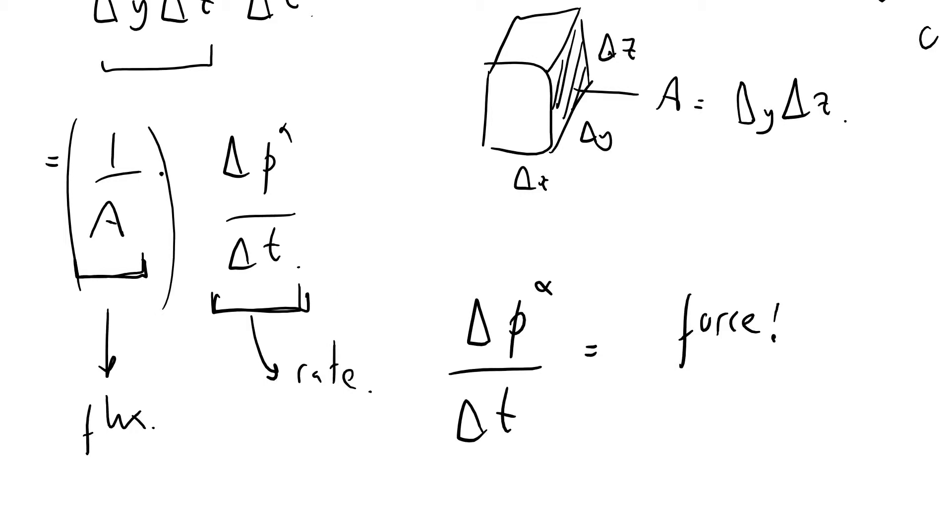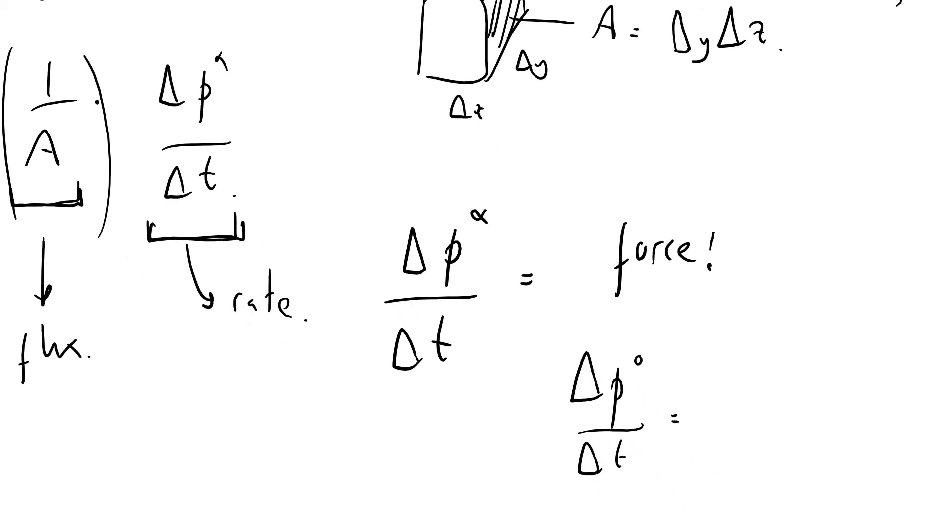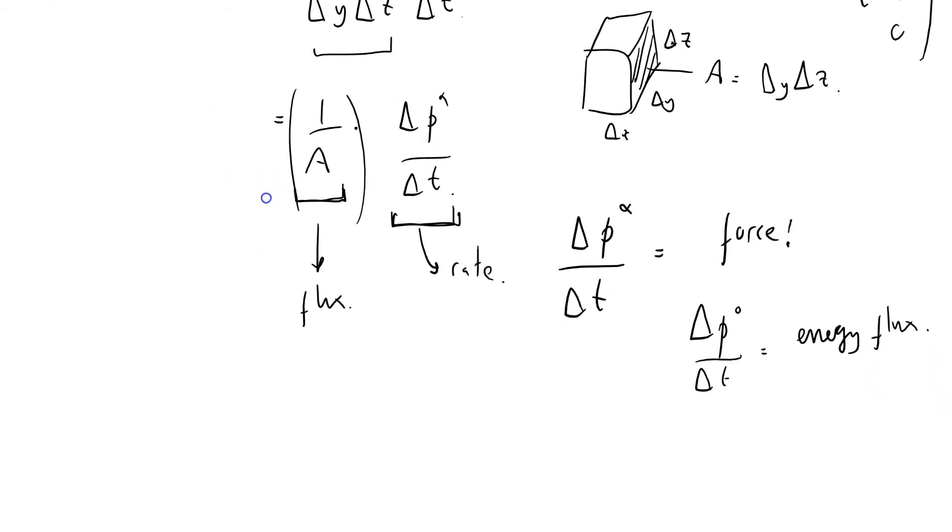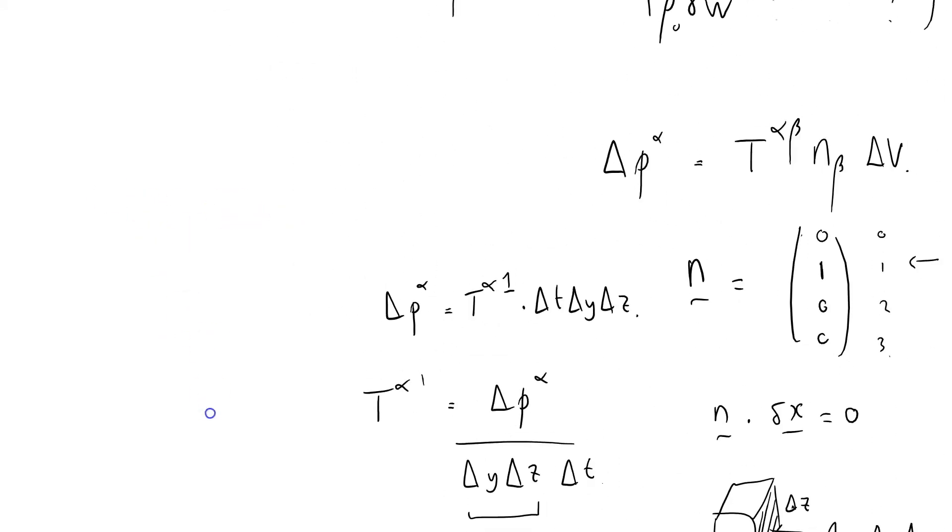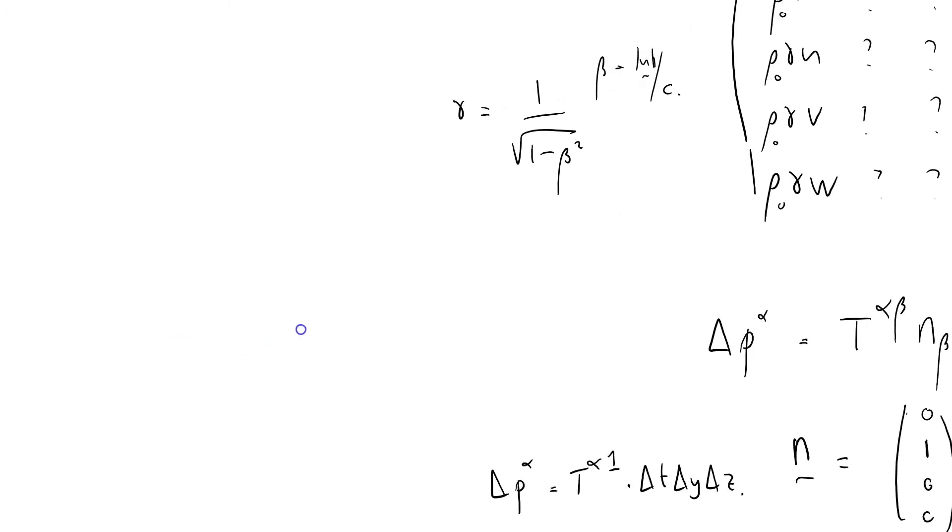So we've got a change of full momentum with respect to time, so it's going to equal a force. Or at least the three spatial components of it are going to equal a force. Delta p0 by delta t is equal to the rate of change of the zero component of the momentum, full momentum, which is energy. So this equals an energy flow. Well that's quite nice. So now I can fill in some other terms of our stress energy tensor here. We've already got quite a lot: rho zero gamma, rho zero gamma u, rho zero gamma v, rho zero gamma w.